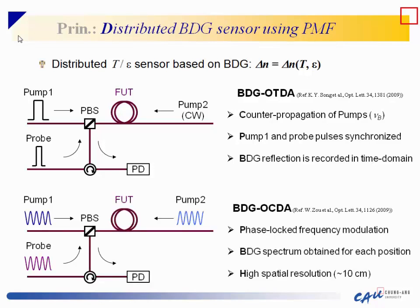Another method is BDG-OCDA, following the BOCDA approach by Professor Hotate. Phase-locked frequency modulations are applied to pump one, pump two, and the probe wave, and the BDG spectrum is obtained for each position. In this case, high spatial resolution is potentially available, similar to BOCDA.